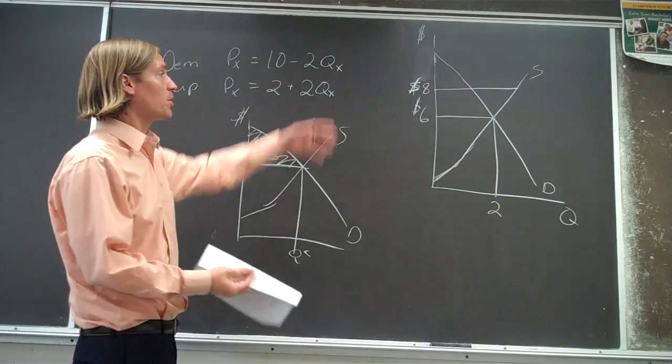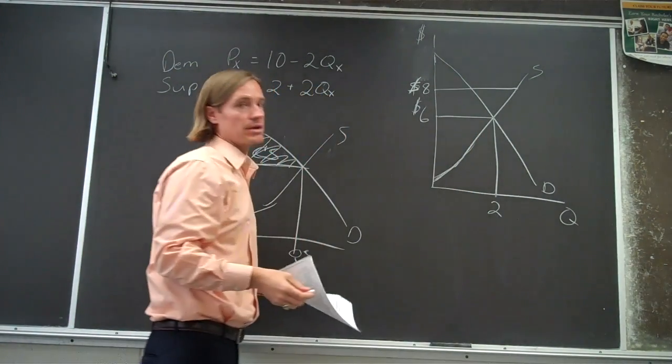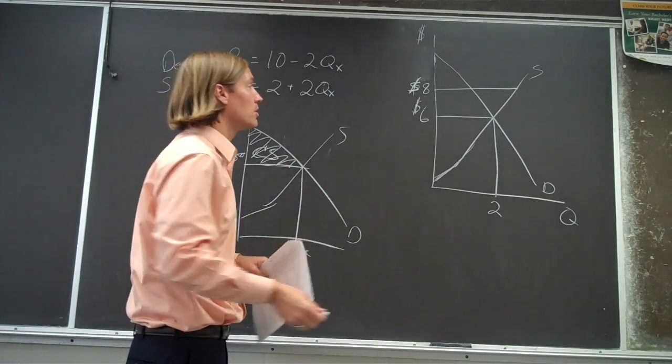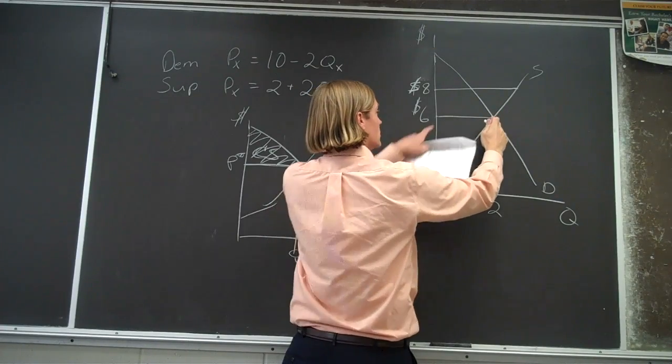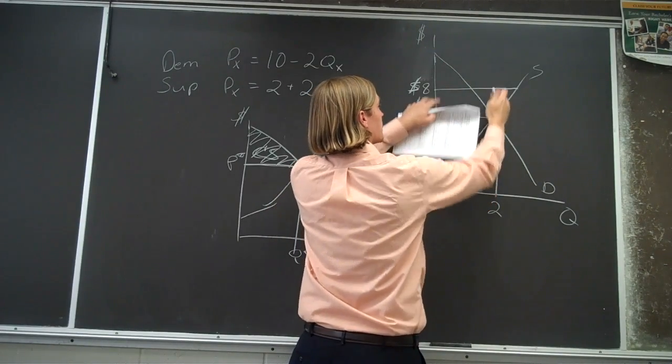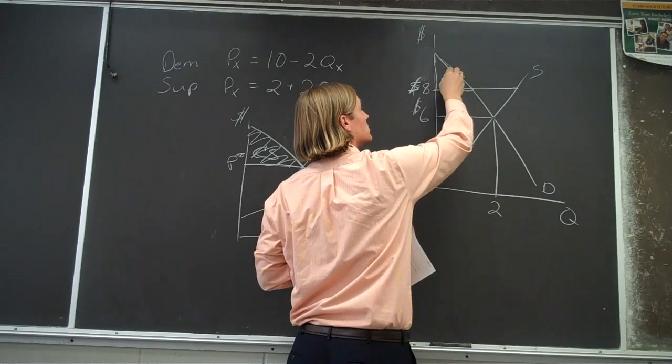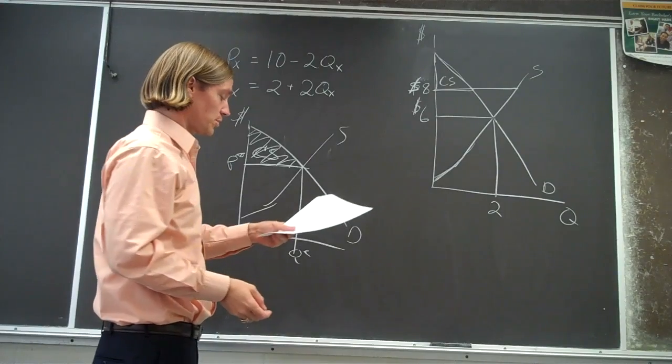So what happens whenever there's a price floor? Well, now the price is higher. And so again, it's still the area above the price below the demand curve. But now instead of being this entire triangle with the price floor in place, it's just this smaller triangle. So this would be the consumer surplus when there's that price floor of $8.